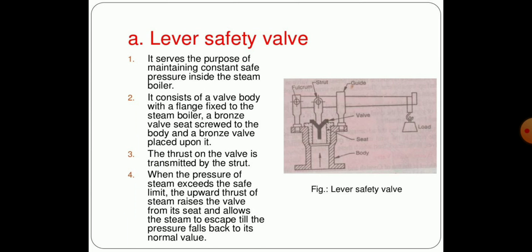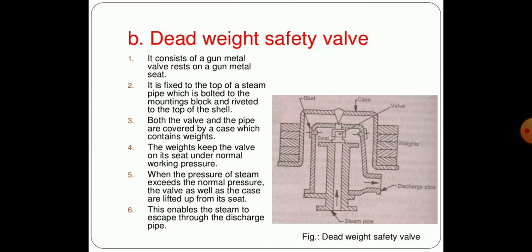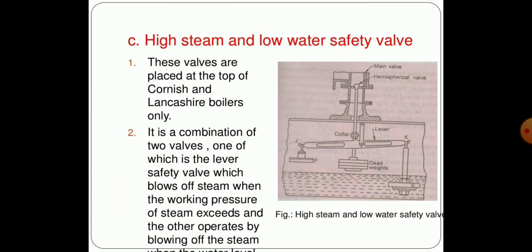These kinds of safety valves serve the purpose of maintaining constant safe pressure inside the steam. All safety valves have the same function: to maintain constant pressure inside the steam generator, that is, the boiler and container. As the pressure increases at high temperature, if it goes beyond the limit, it can cause accidents which pose higher hazards to humans as well as structural requirements. It consists of a valve body with planes fixed to the steam boiler, a bronze valve seat screwed to the body, and a bronze valve placed upon the seat.